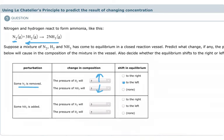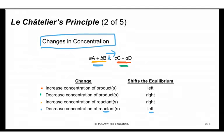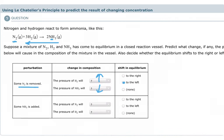If some NH3 is added — NH3 is our product — increasing the concentration of a product means equilibrium also shifts to the left. As I add ammonia and increase the concentration of our product, equilibrium will shift to the left, so the pressure of N2 goes up and the pressure of H2 also goes up.